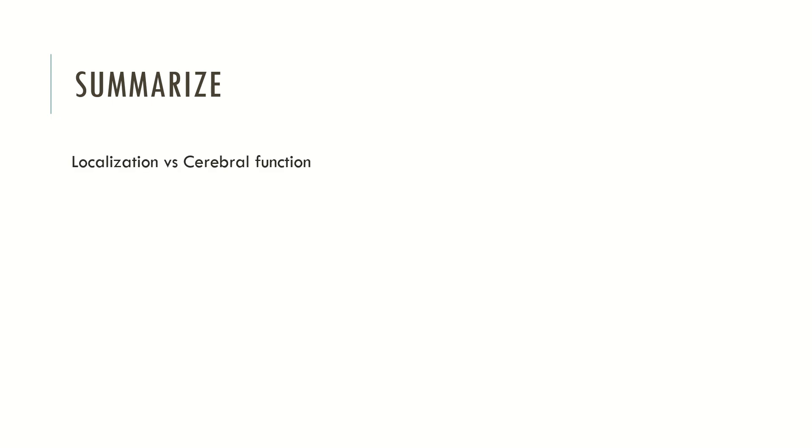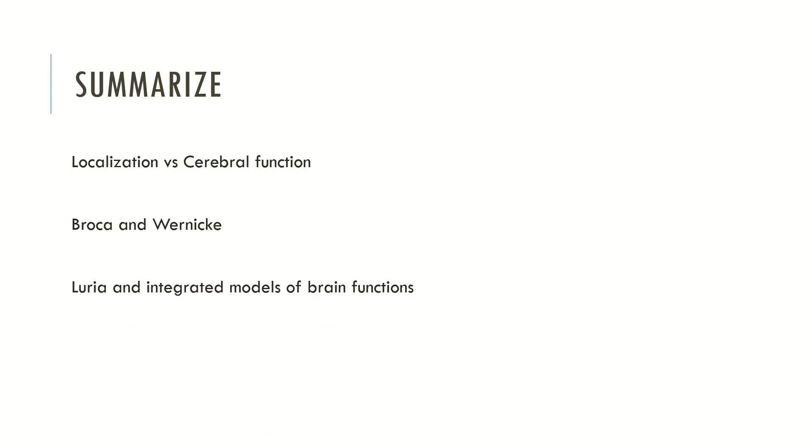To summarize today's content: at the beginning of the century there was a great debate between localization of brain function and cerebral functional theory, which drove new ideas, concepts, and empirical findings regarding the connection between cognition, brain, and behavior. Broca and Wernicke were very important to the idea of localizing motor speech production and speech comprehension respectively. Neuropsychology has different sub-areas and different methods of research.